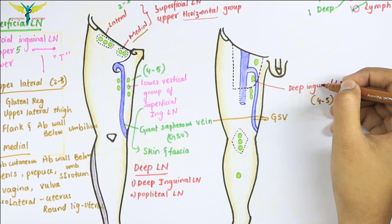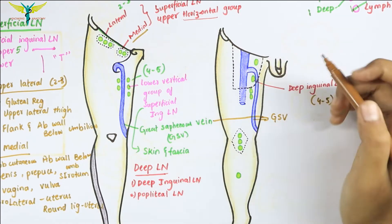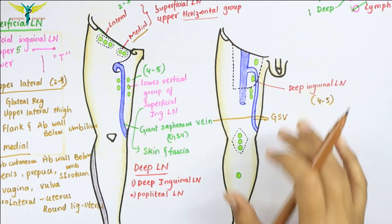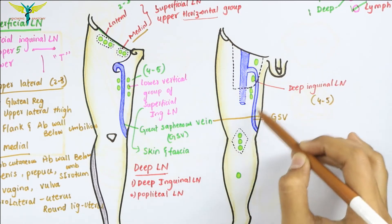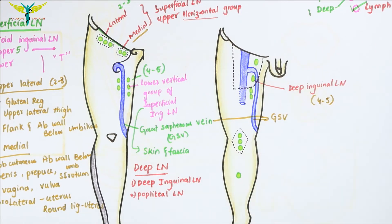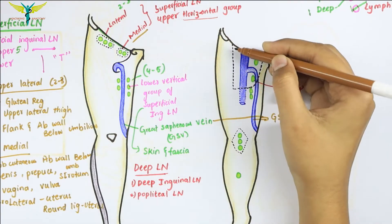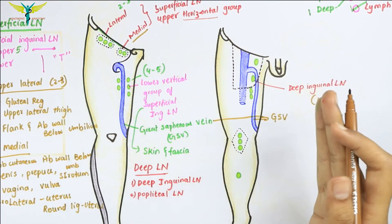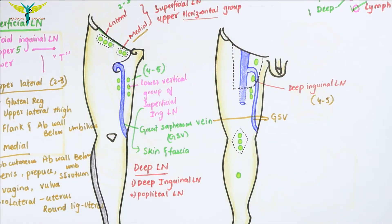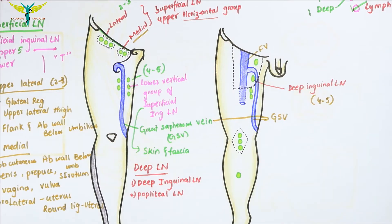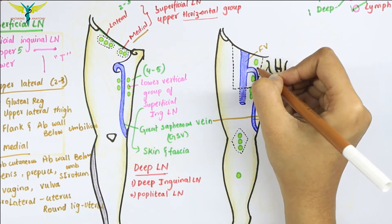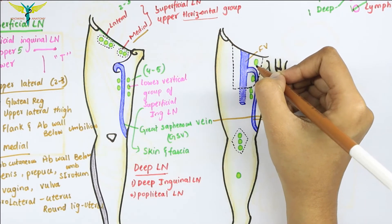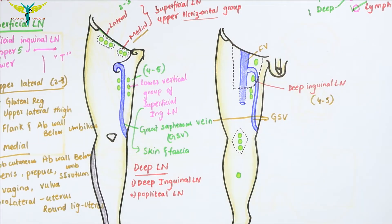The deep inguinal lymph nodes lie on the medial side of the upper part of the femoral vein in the femoral triangle. The most proximal node of this group lies in the femoral canal, and this node is called the gland of Cloquet or the gland of Rosenmuller.